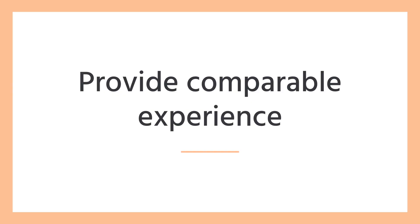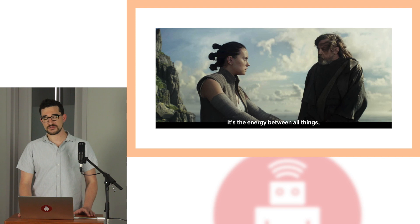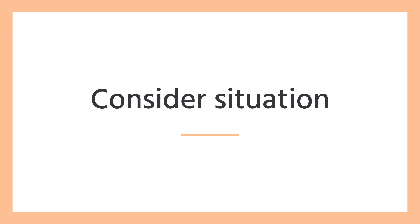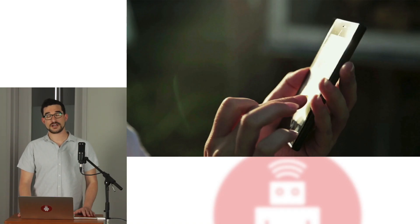The first principle is to provide a comparable experience, allowing all people to accomplish tasks in a way that suits them without undermining the quality of the content. A great example of this is providing subtitles for your video content. The second principle, consider situation, advises us to make sure our interfaces deliver a valuable experience for people regardless of their circumstances — for example, making sure your content is legible on a mobile form factor and when it's bright outside.